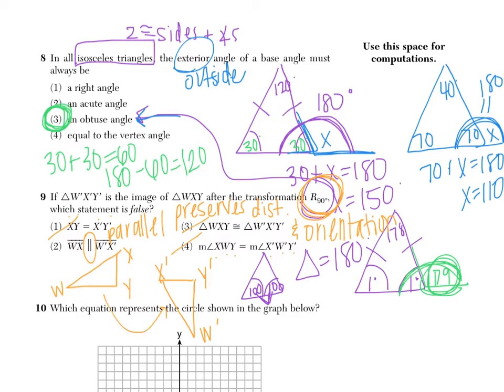And so what we're asked is whether or not WX is parallel to the primes. And you can clearly see that if I were to extend these two lines infinitely, they would cross each other, which means that they are not parallel, which means that this is the false statement we were looking for.